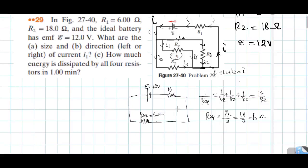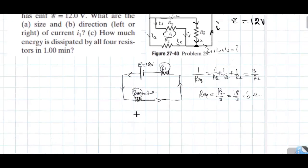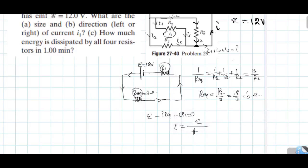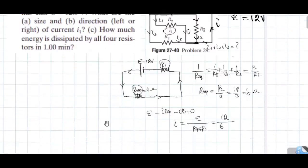Now we need to find what is the current. For the series combination, R_total equals R_equivalent plus R1. Using Kirchhoff's voltage law: epsilon minus I·R_equivalent minus I·R1 equals 0, so I equals epsilon divided by R_total. Epsilon is 12 V, R_equivalent is 6 ohm, and R1 is also 6 ohm.